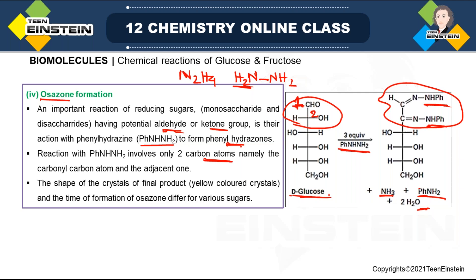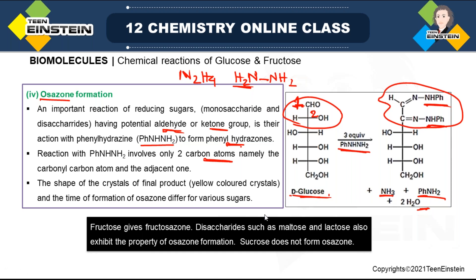The final product has a crystalline nature. Depending on the type of sugar taken, the shape of the crystal may differ. They are yellow colored. The time required for product formation also differs for various sugars. For fructose, we get fructosazone. The reaction shown here is for D-glucose, but if fructose is the starting material, the product is called fructosazone.